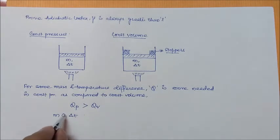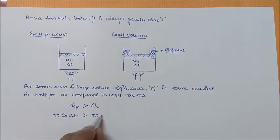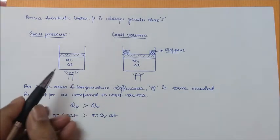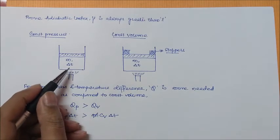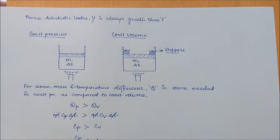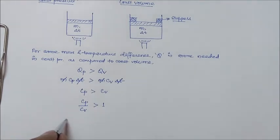We know that Q can be written as m·c·ΔT, where c is the specific heat, which depends upon the type of process. So we can write: m·Cp·ΔT is always greater than m·Cv·ΔT. Since mass m is the same for both arrangements and the temperature difference ΔT is also the same, both can be cancelled out, giving us Cp is always greater than Cv.